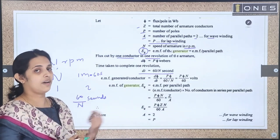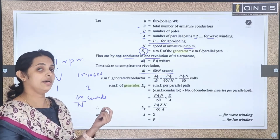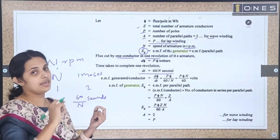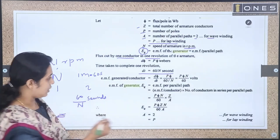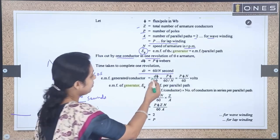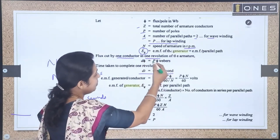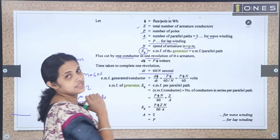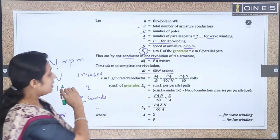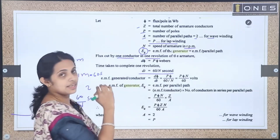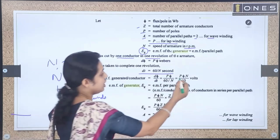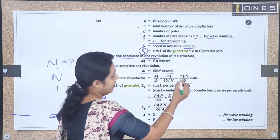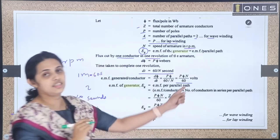By Faraday's law, the EMF induced in one conductor equals dφ/dt. The flux cut is P × φ and the time taken is 60/n. So the EMF induced per conductor equals P × φ × N divided by 60 volts.